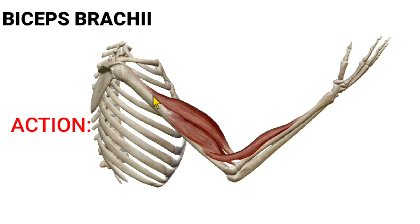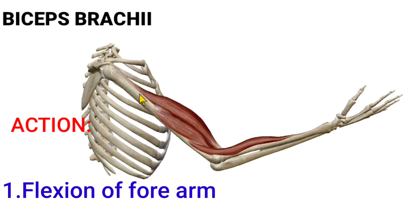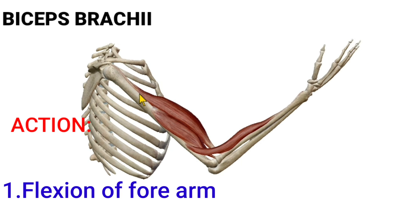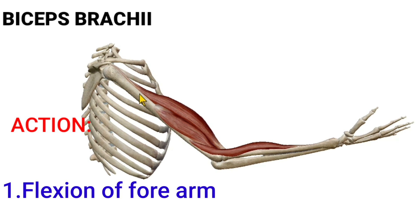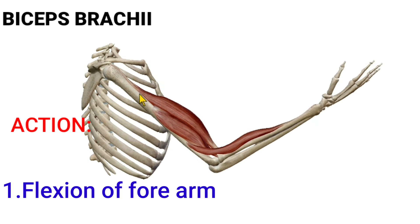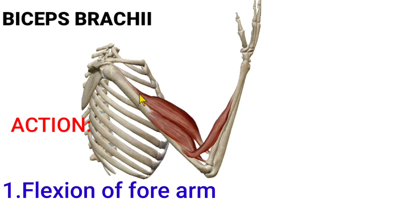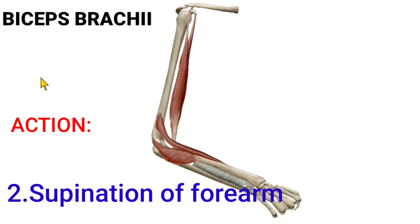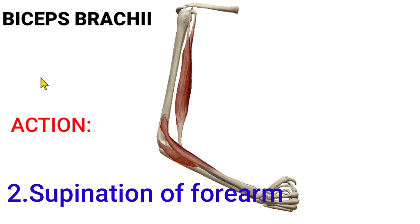Action of biceps brachii muscle: it causes flexion of the forearm. It also causes supination of the forearm.